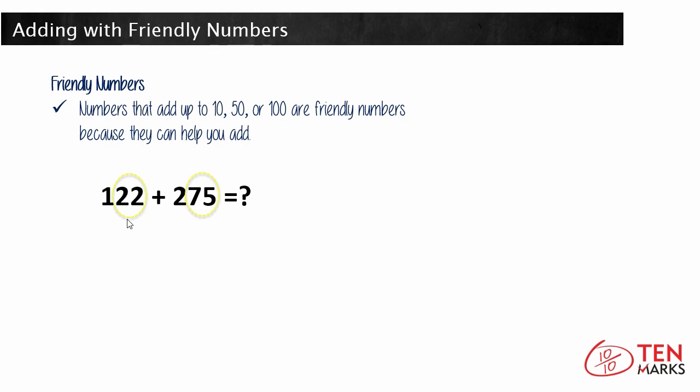Well, the 22 from 122 is close to 25. So if you make this 22 a 25 and add it to the 75 from 275, as you see here, 25 plus 75, you get the sum of 100, which is a friendly number.